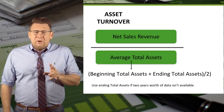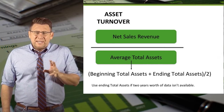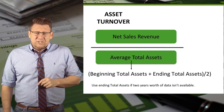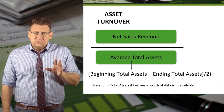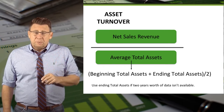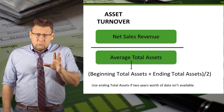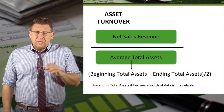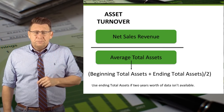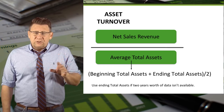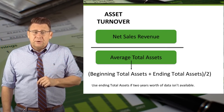Sometimes you might see a question where only ending total assets are given. In that case, just use that number, but realize that in the real world you would be able to find 2 years worth of data. This is another ratio where the higher the number the better.